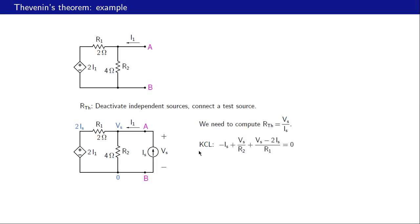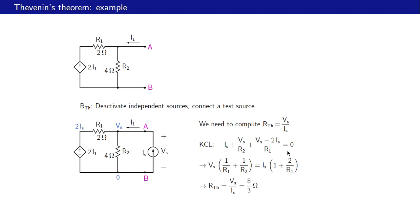The KCL equation at node a involves three currents: i-s, and the currents through r-two and r-one. Taking i-s as entering the node gives minus i-s; the current through r-two is v-s divided by r-two; and the current through r-one is v-s minus two-i-s divided by r-one. All three add up to zero. After simplifying, we obtain r-th equal to v-s divided by i-s, which comes out to eight-thirds ohms. So the Thevenin equivalent has v-th equal to zero and r-th equal to eight over three ohms.